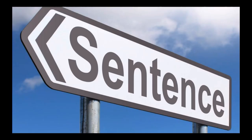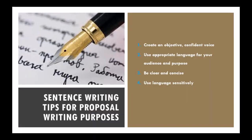Now we are going to speak about sentences and how important they are. In academic writing, every sentence you write must be grammatically complete — a grammatically complete sentence consists of a complete thought and makes sense on its own. When writing, you need to clearly distinguish your voice and the voices of your sources, and identify each source appropriately. You need to create an objective and confident voice, and use appropriate language for your audience and purpose.